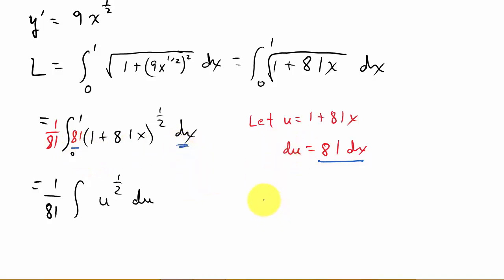Well now, since I changed my variable to u, I need to change my limits. Because these limits here are x values. I need u values. Alright. So, I've got u is equal to 1 plus 81 times 0 equals 1. So I took the 0 and I plugged it in for x. That's going to give me my u value. So this limit will be 1.